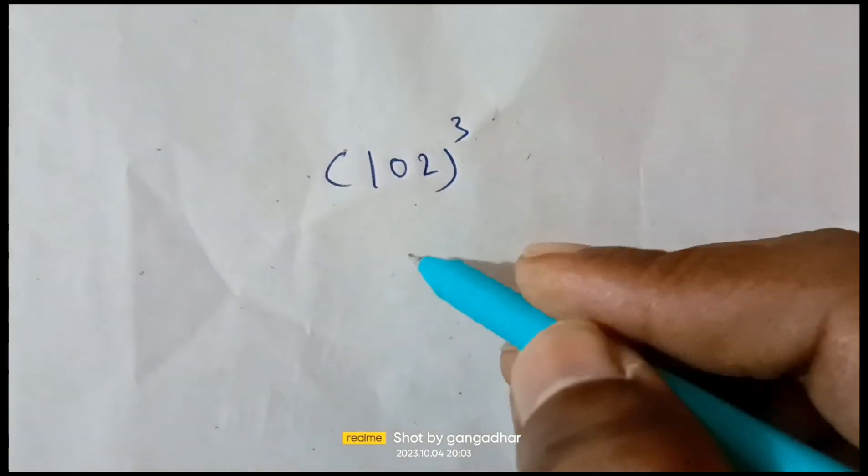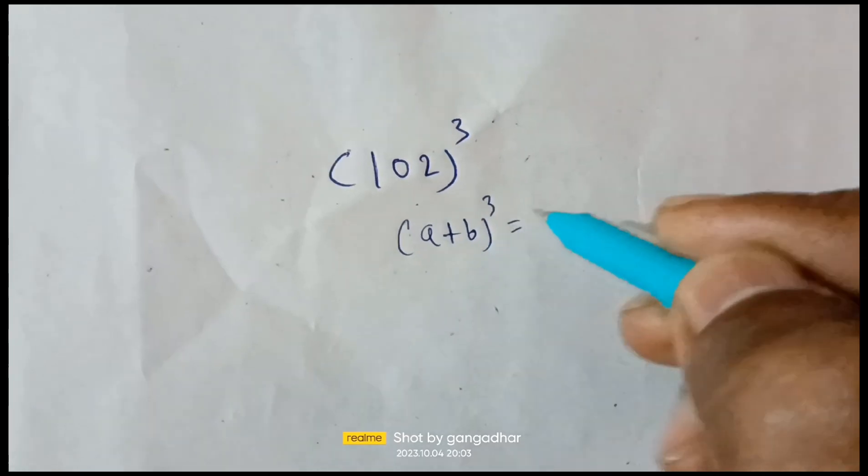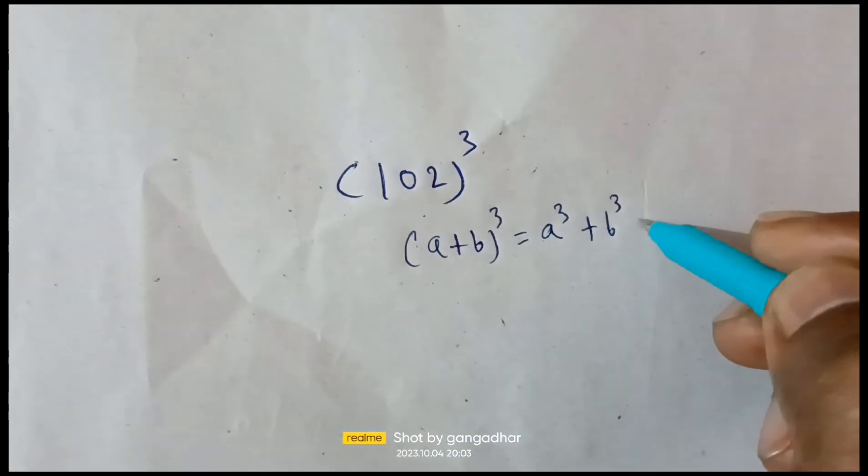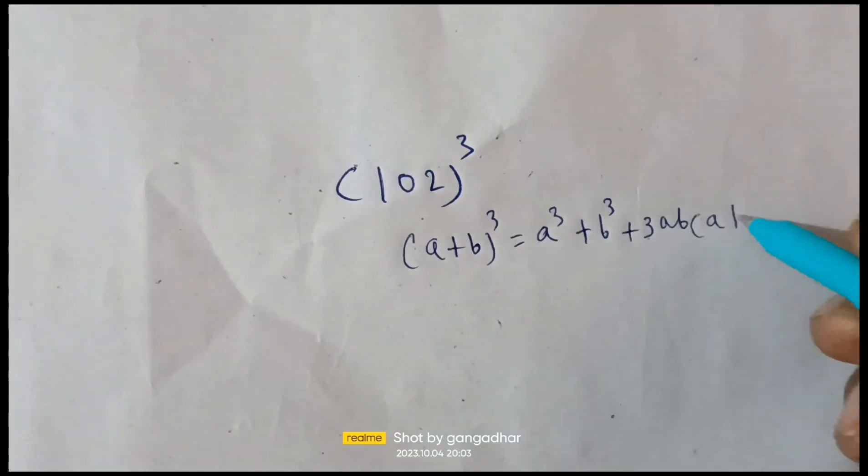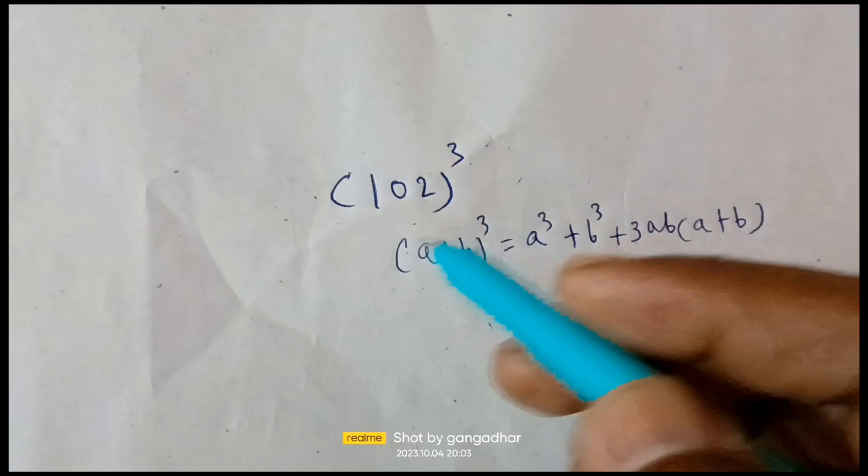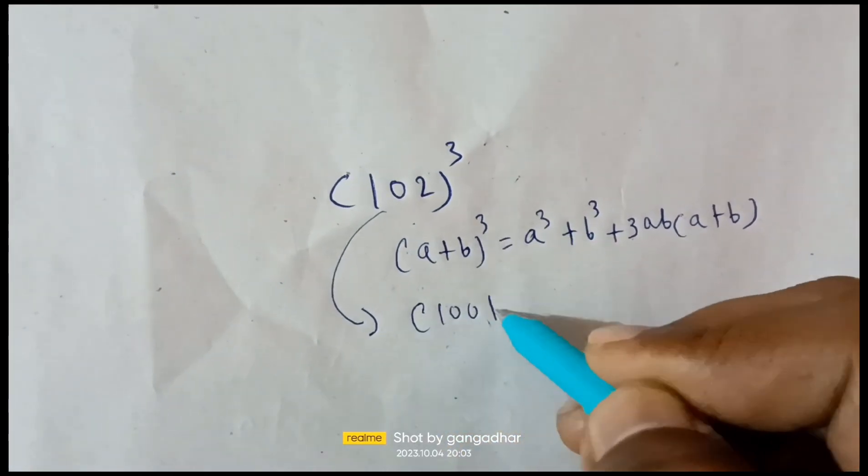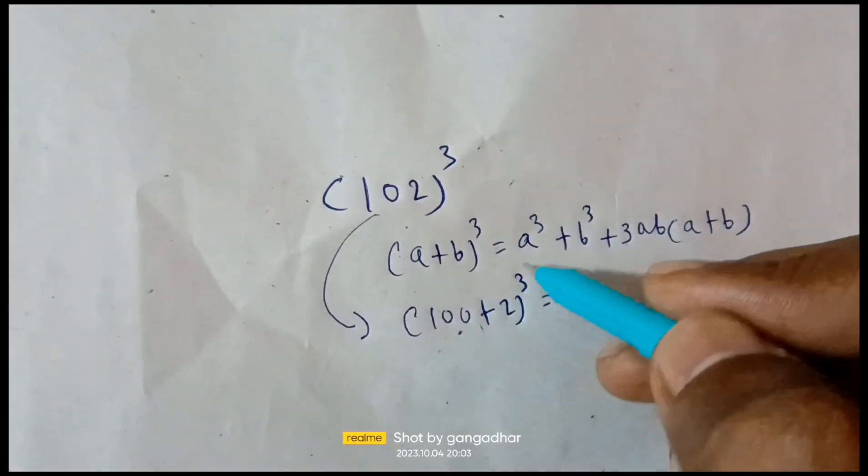102 whole cube - you have to evaluate this using the formula (a+b)³ = a³ + b³ + 3ab(a+b). We can write 102 as (100+2)³ and substitute the values.